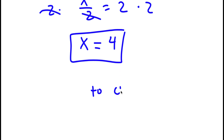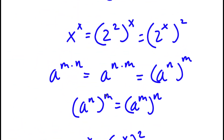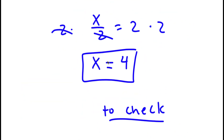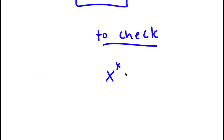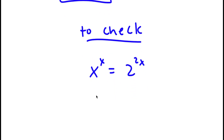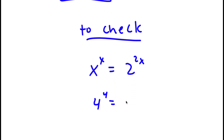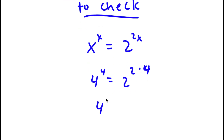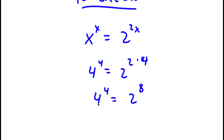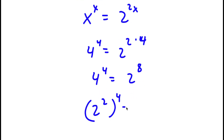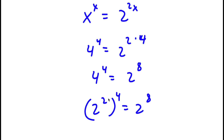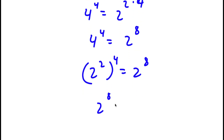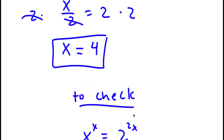To check: my original equation was x to the power of x equals 2 to the power of 2x. Substituting x equals 4, I have 4 to the power of 4 equals 2 to the power of 2 times 4, which is 4 to the power of 4 equals 2 to the power of 8. Now 4 is the same thing as 2 squared, so 2 squared to the power of 4 equals 2 to the power of 8. Since 2 times 4 is 8, I have 2 to the power of 8 equals 2 to the power of 8. This confirms my solution is correct.